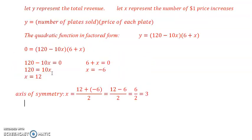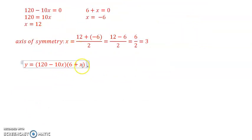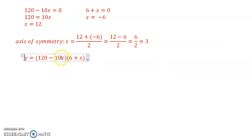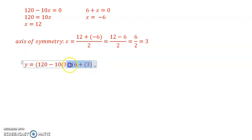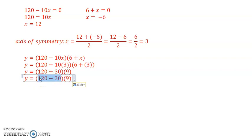Now we're going to find the corresponding y value, so I take the original revenue equation, put in 3 for x, and solve. So 10 times 3 gives us 30, 6 plus 3 is 9. Continue to solve, we got 120 minus 30 is 90, 90 times 9 is 810.